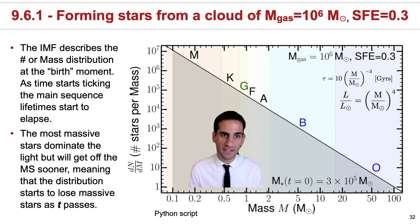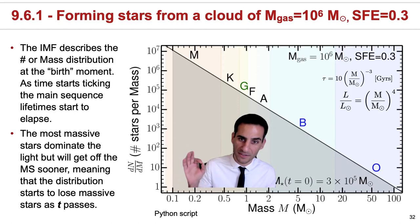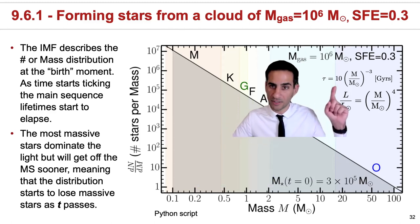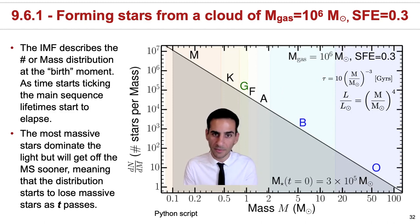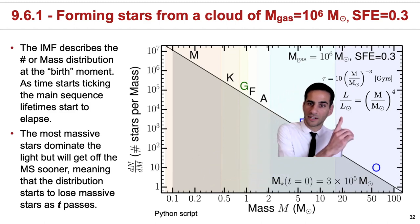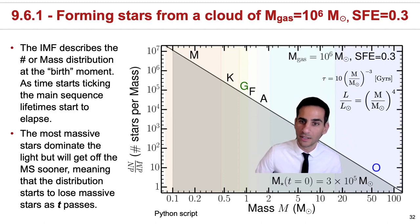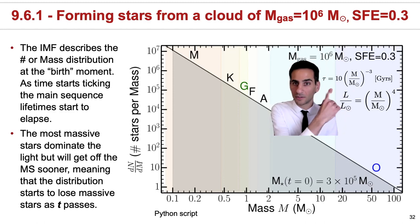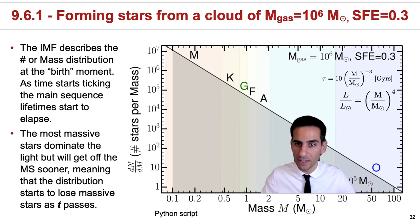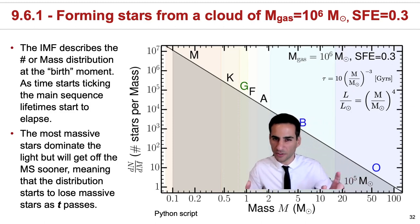An important thing to realize is that the IMF describes the relative number of stars per mass or the mass distribution at the birth moment—this is what happens at instant zero when all stars have been formed. However, as time starts ticking, the main sequence lifetimes start to elapse. The most massive stars always dominate the light because of the temperature dependence—remember that luminosity goes as M^4 and also as T^4. While these spectral types are alive, they dominate the light even though they're way less numerous, but their lifetimes are very short—a few million years maximum. After a few million years, some of these stars will start disappearing.